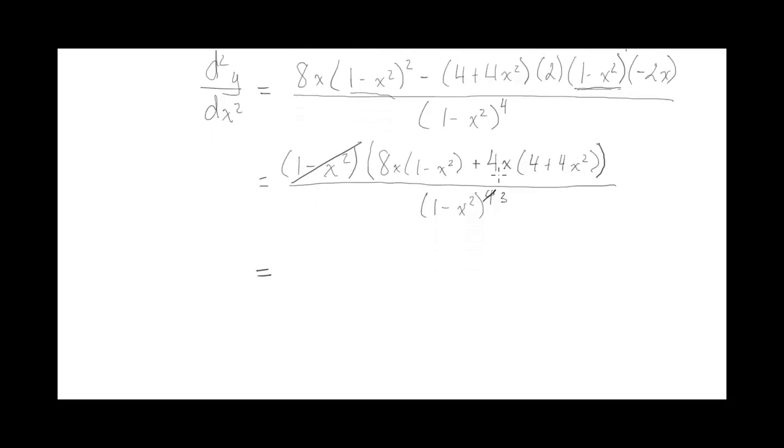Now inside the brackets here, I'm going to expand. So 8x minus 8x cubed plus, now the 4x gets multiplied in, so 16x plus 16x cubed, all divided by 1 minus x squared cubed.